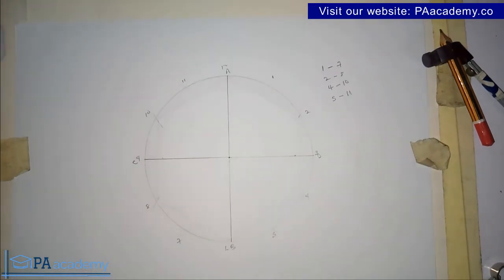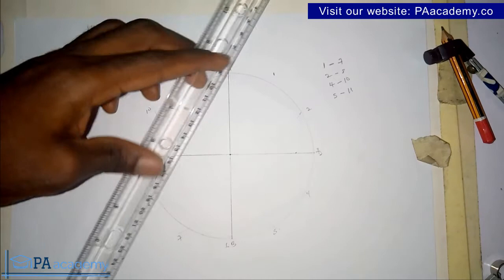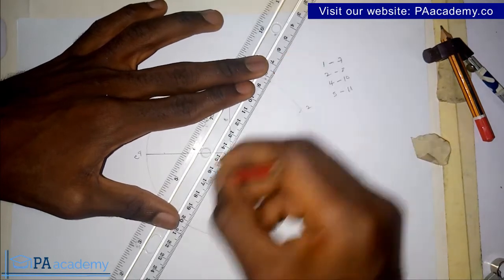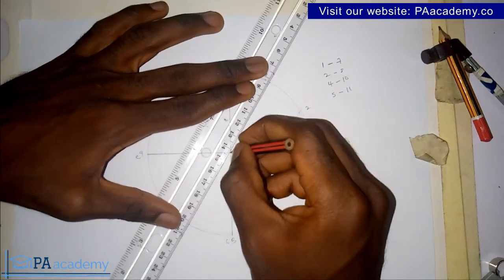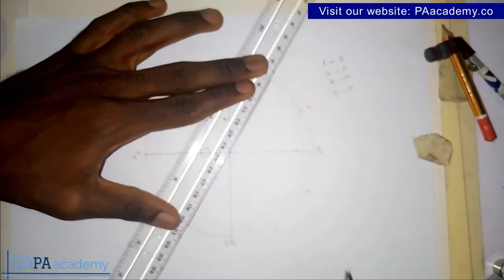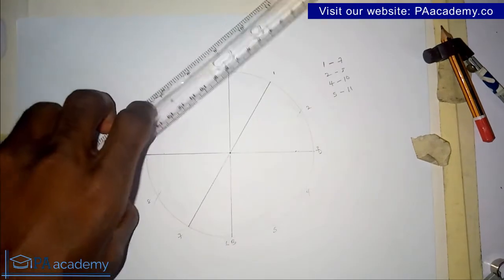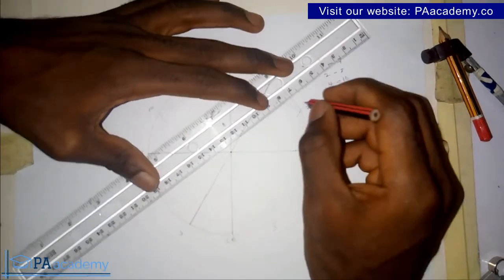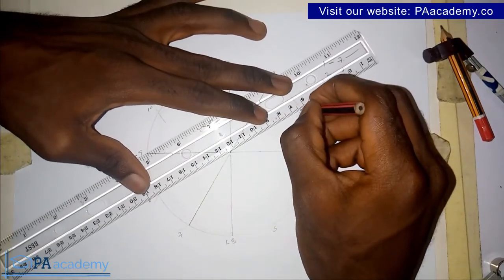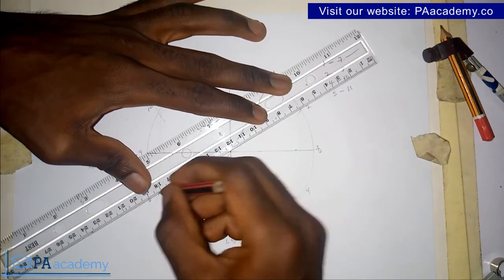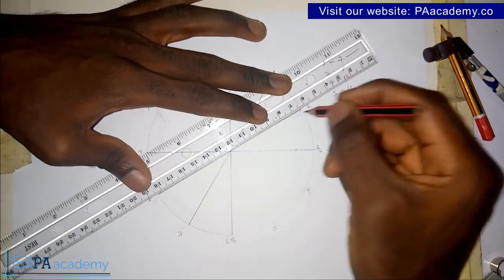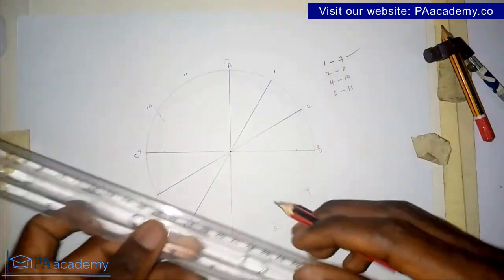So with my pencil and ruler, from point one to point seven. Those points will also pass through the center of the circle. If yours is not passing through the center, that means there's a mistake somewhere. From point two to point eight, and then from point four to point ten.